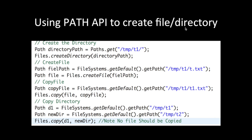Here is an example of using the Path API to create a file and directory. First, to create the directory, we take help of the Path API, provide the directory path, create the path, then use Files.createDirectory() and the directory will be created. To create a file, we also use FileSystem.getDefault() which gives the default file system based on your operating system, then get the path and create a file using the file path.